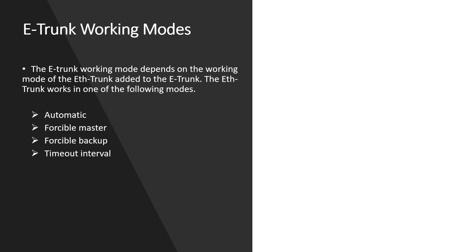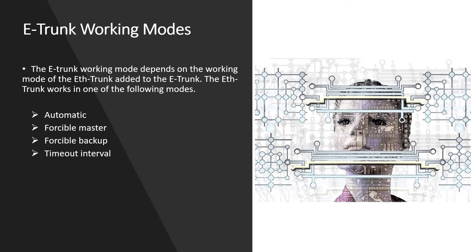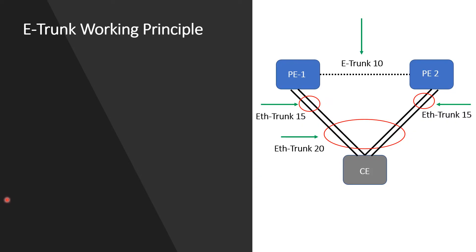The working mode of an Ethernet trunk interface defines the working mode for an E-trunk in a multi-chassis LAG. The Ethernet trunk can work in one of four modes: automatic mode, forcible master (where you force a specific device to be master), forcible backup, and timeout interval. In timeout interval mode, the master and backup devices send hello messages to each other — if the backup doesn't receive a hello within the timeout interval, it takes over as master.